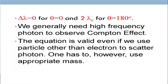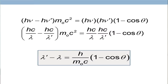Delta lambda equals 2 lambda_c for theta equals 180 degrees. That is the largest change you can have — when cosine theta becomes minus 1. At that point, the total change in wavelength will be twice the Compton wavelength.